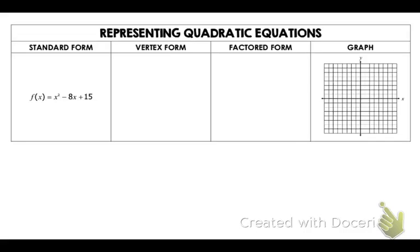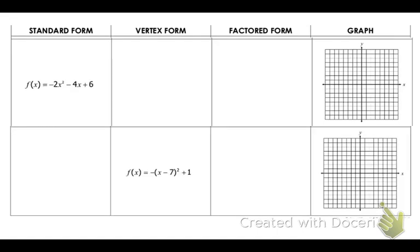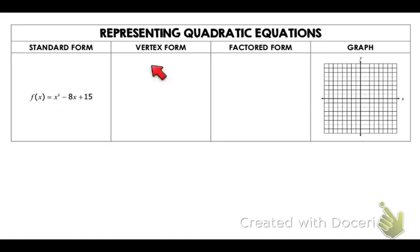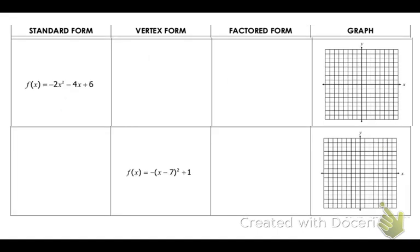This is your practice activity from standard, vertex, factored, and graph forms. Even if you don't have a graphing calculator, you're going to be fine because you're going to use all of these methods to get from one to another. I'm going to go ahead and do the second one with you because it's a little bit more difficult. Notice how it's from standard and then you go to all of those forms — it's just a little bit more complicated.